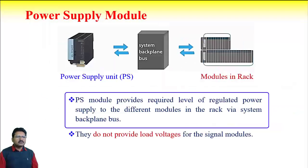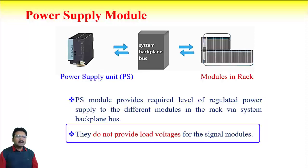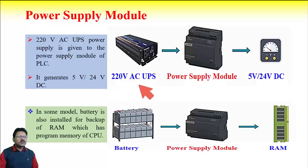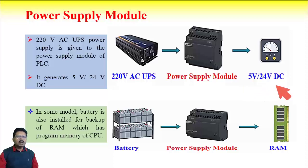The power supply module provides the required level of regulated power supply to the different modules in the rack via the system backplane bus. The power supply module does not provide load voltage for the signal module. In general, 220 volt AC UPS power supply is given to the power supply module of the PLC, and this module ultimately generates 5 or 24 volt DC which is normally required for the different modules. In some modules, a battery is also installed for backup of RAM which holds program memory for the CPU.